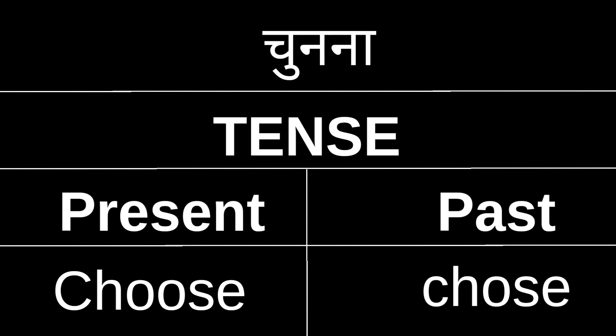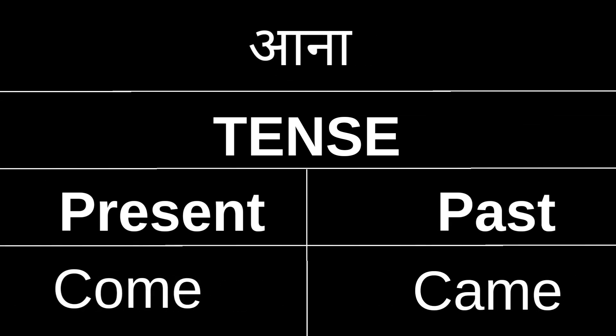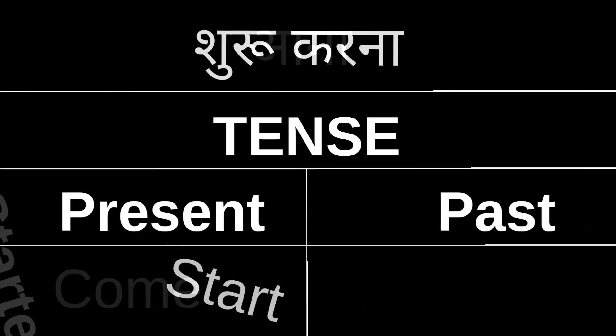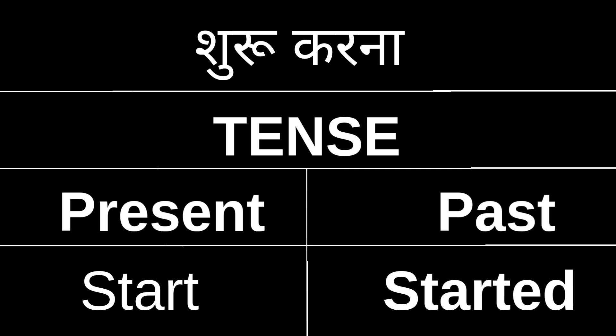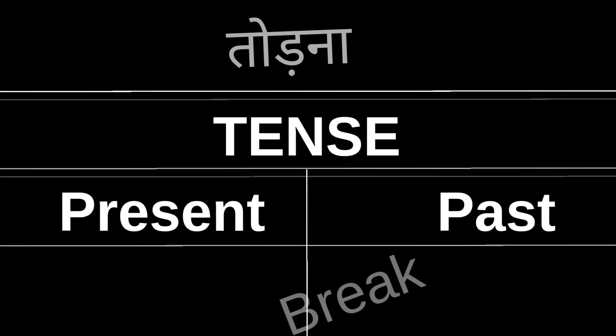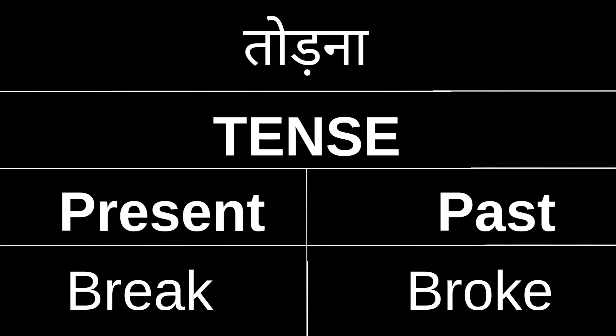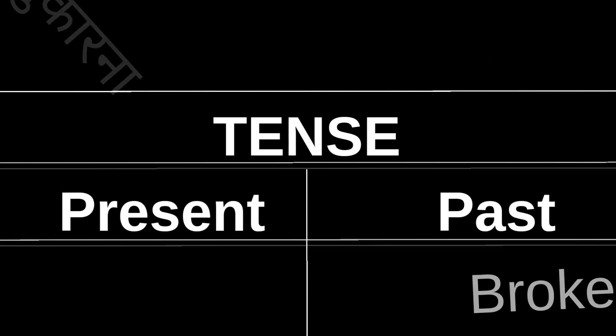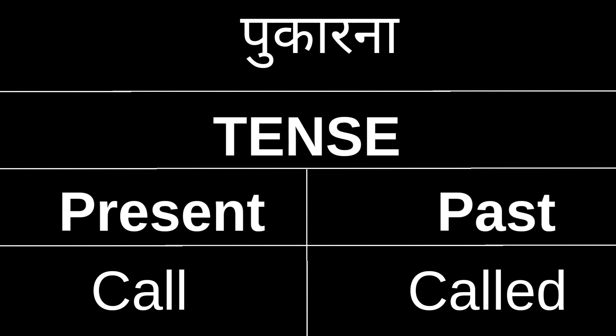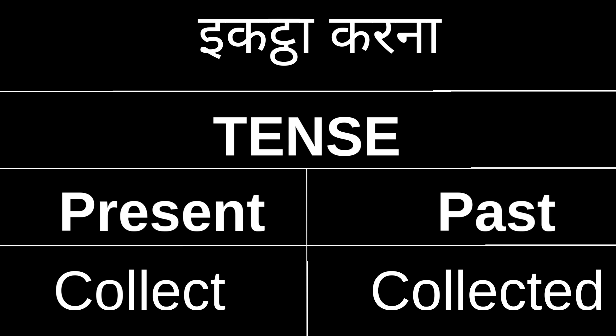Chunna — present tense: choose, past tense: chose. Aana — present: come, past: came. Shuru karna — present: start, past tense: started. Todna — present: break, past tense: broke.